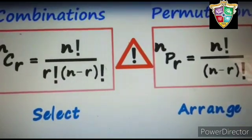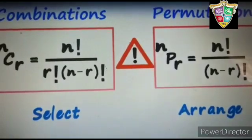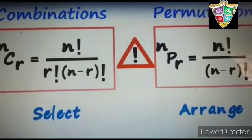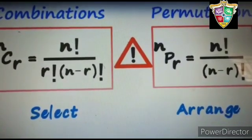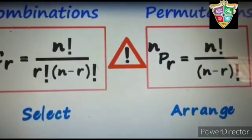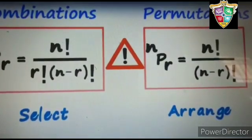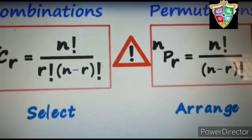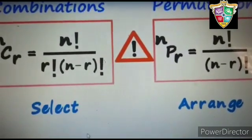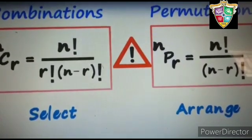Look at the formula of combination and permutation. For combination, it is NCR equals to factorial N divided by R factorial into N minus R factorial. And permutation NPR equals to factorial N divided by N minus R factorial. If you know this formula very well, then it will be very easy to do the problems related to combination and permutation.